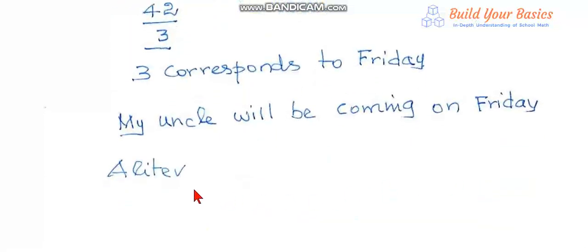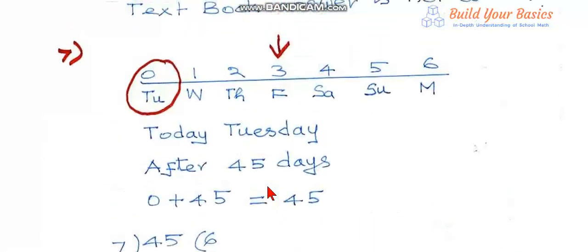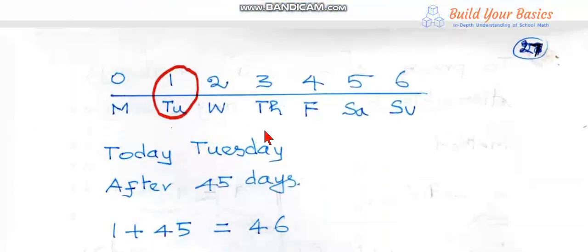There is another method of doing the problem. We need not take Tuesday to correspond to 0. We can as well take Tuesday to correspond to 1. Today is Tuesday.